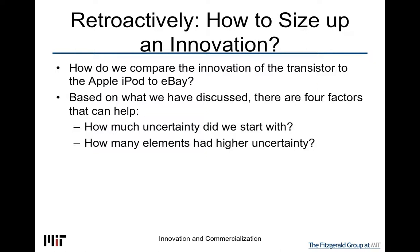However, there are other metrics that combined with the first will help. The second factor: how many elements had higher uncertainty? In our model, all the circles don't have to be the same size. I gave the example of TSMC, where the market application and the technology were fairly constrained — more or less already out there. The largest uncertainty introduced was a new business model. So that's a medium-scale innovation, because two of the elements didn't change much, even though there was a lot of uncertainty in the third element — the new business model that TSMC uses.